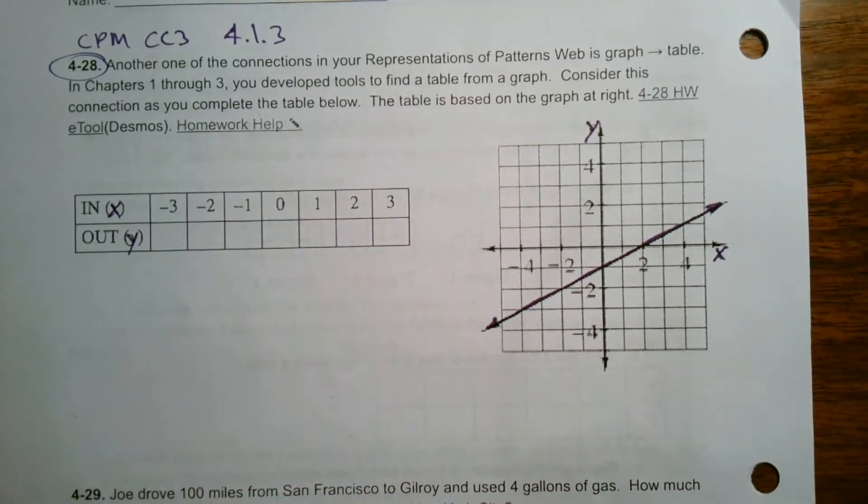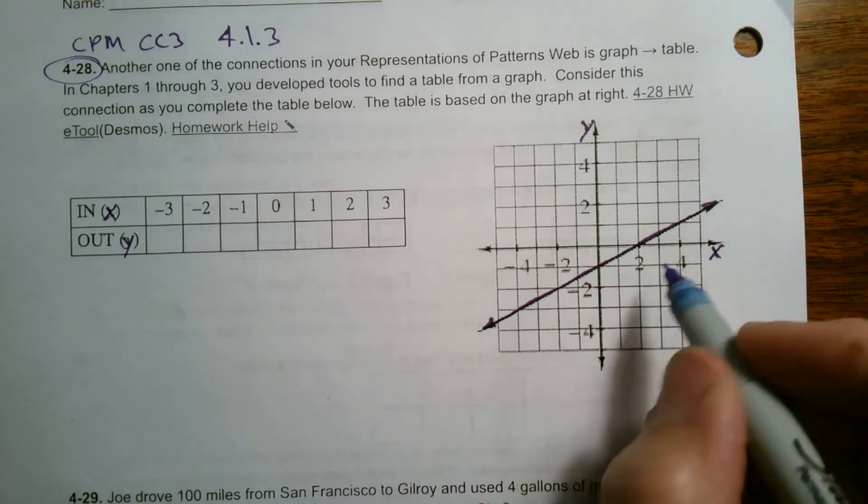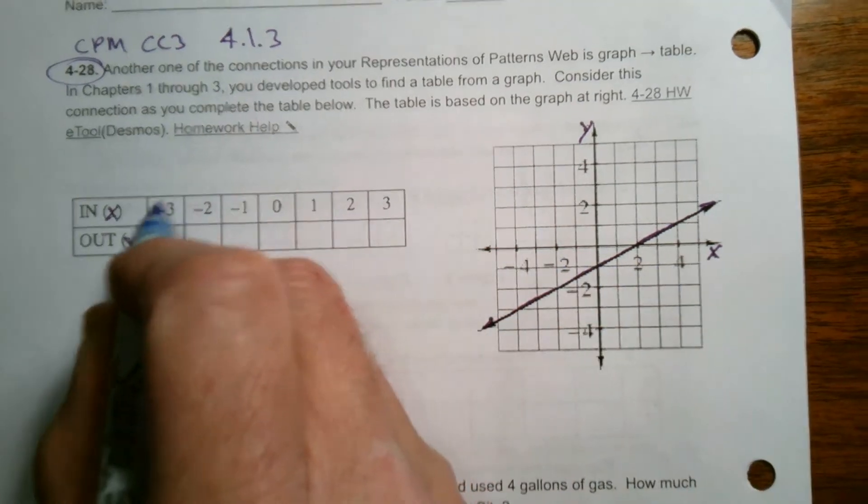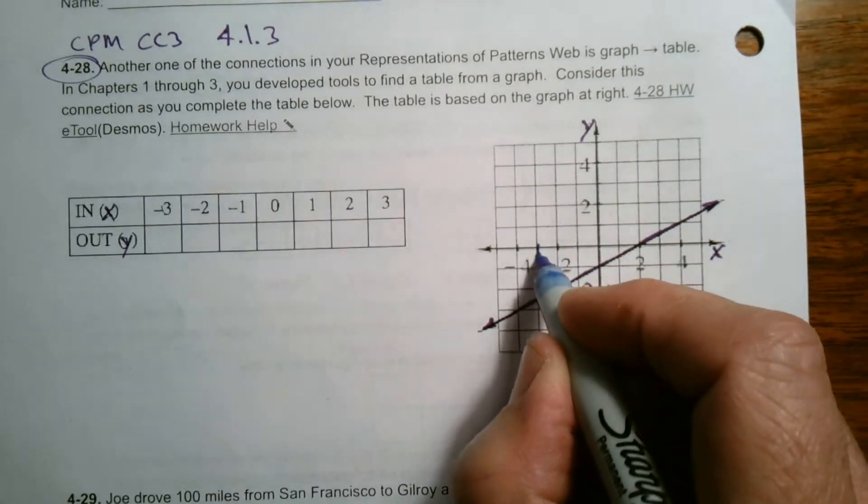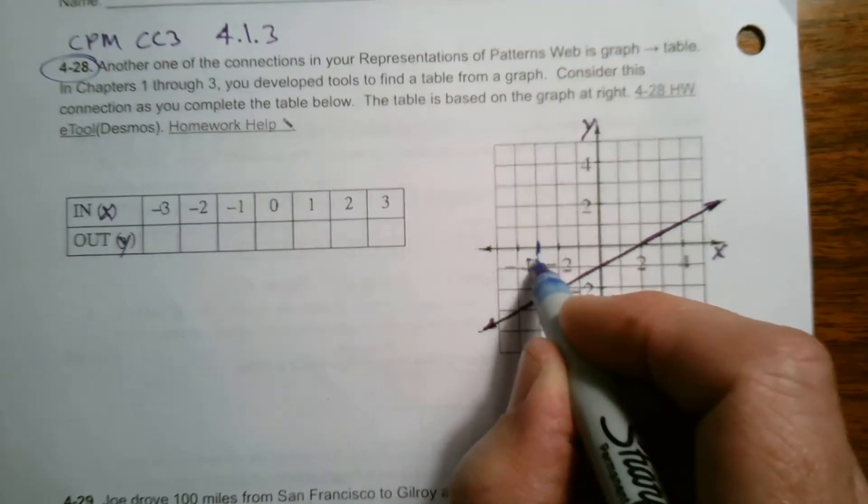So where are those values? Let's look at this. Negative three is the X. I want to know what's the corresponding Y value. So at negative three, this is negative two, this is negative three right here.